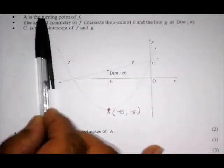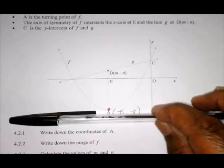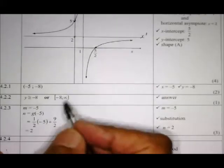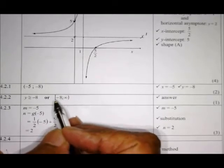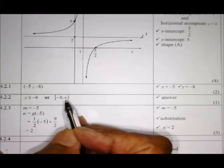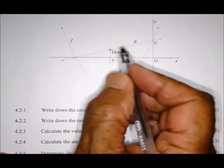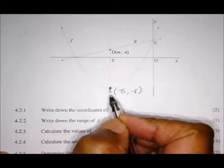4.2.4: Calculate the area of OCDE. If you look carefully, you'll notice this is a trapezium because those two lines are parallel, which is the property of a trapezium. The formula for a trapezium is: area = (1/2) × (sum of the two parallel sides) × (perpendicular distance between them).